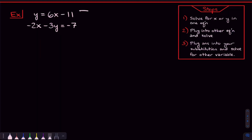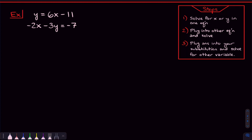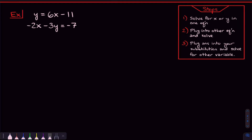We're going to start off with this system of equations right here and solve it using the substitution method. Here are the three steps you need: the first step is to solve for x or y in one of the two equations. We want to get x or y by itself in one of the equations — and look, y is already by itself in the first equation. So step one is already done for us.